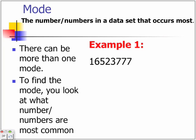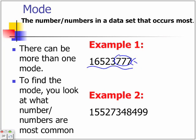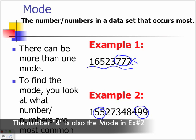For example, in here, you can see that 7 appears the most. So that will be your mode. And over here, you can see that 5 and 9 appear the most. So these are your modes.